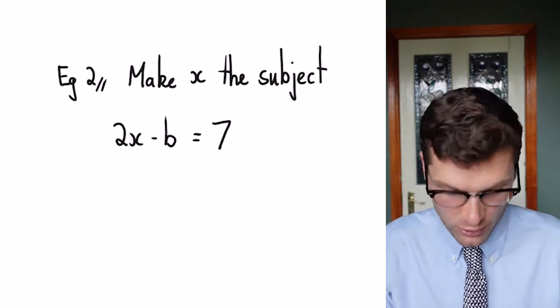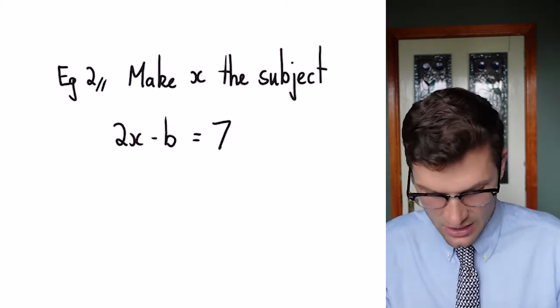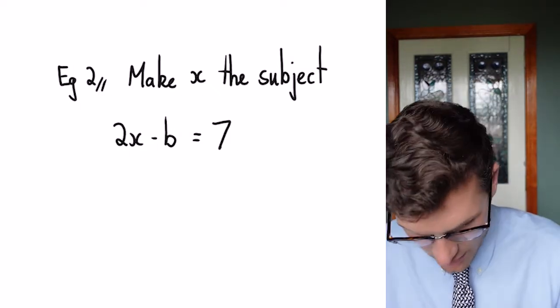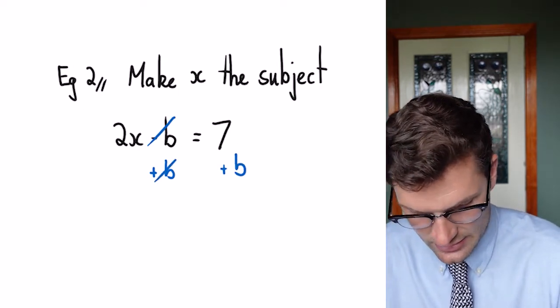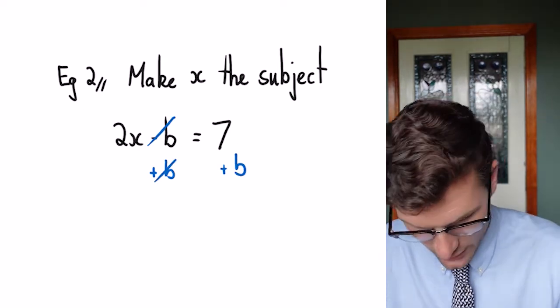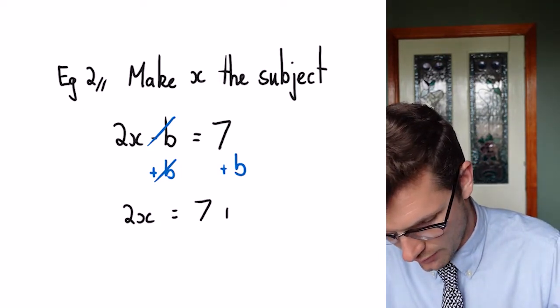So for this one, we've got to find out what's furthest away from our x, which is the minus b. So to get minus b onto the other side, I've got to plus b from this side and plus b from that side. These two cancel out. My next line of working there is 2x is equal to 7 plus b.